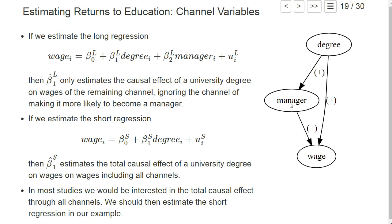If instead we estimate the short regression — if we only regress wage on obtaining a university degree — we estimate with beta_1^S hat the total effect of obtaining the university degree on wages. In most studies one is typically interested in the total causal effect through all possible channels by which the university degree could affect wages, so we would estimate the short regression.